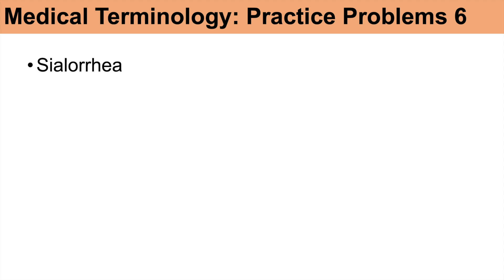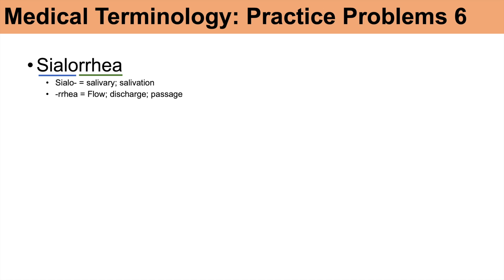The next word is sialorrhea. Breaking it down: 'sialo' means salivary or salivation. And 'rhea' means flow, discharge, or passage. So sialorrhea is an abnormal discharge or flow of saliva — usually referring to increased salivation.